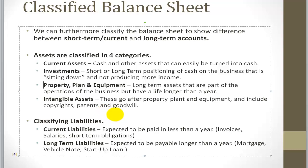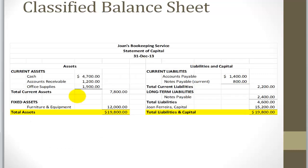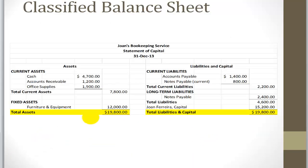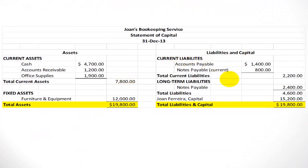We also classify liabilities in two sections: current liabilities, which are expected to be paid in less than a year — such as invoices, salaries, and short-term obligations — and long-term liabilities, which are payable longer than a year, such as a mortgage, a vehicle note, or a startup loan. The classified balance sheet breaks down assets and liabilities into current and long-term sections.